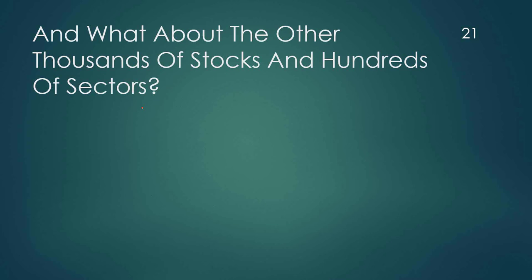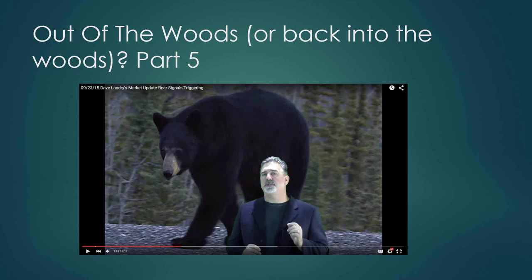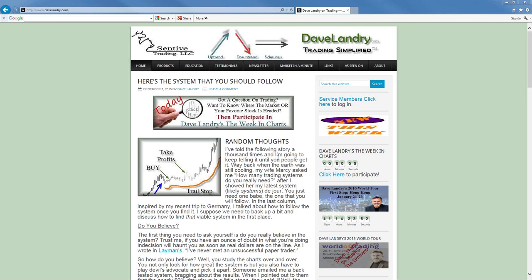Now the question is what about the other thousands of stocks and hundreds of sectors? Let's jump into the charts. Since we already looked at the indices, let's take a look at a few sectors. I'm going to keep this bear market analysis in here until proven wrong or right — notice that on September 23rd was my first bear market update; those signals are still valid. Check that out on YouTube and on the what's-new section of my website.